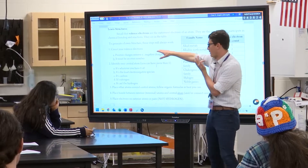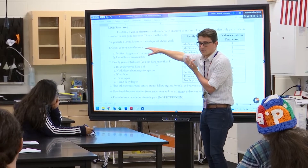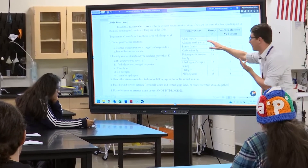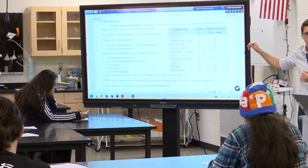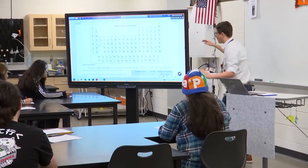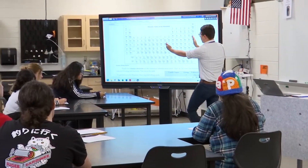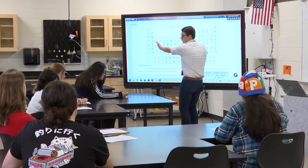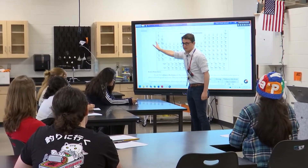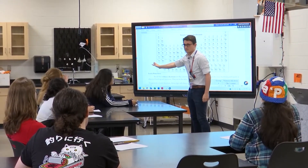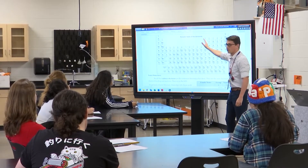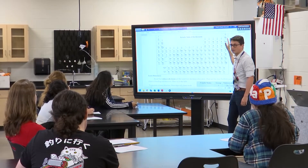Do we remember how to count valence electrons? You have a periodic table on there. Remember, that's groups 1 through 18. We're not working with transition metals yet—we will next year. How many valence electrons? One, two, three through eight.